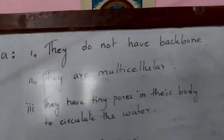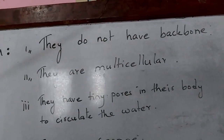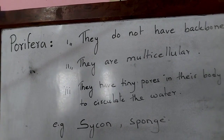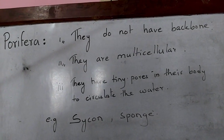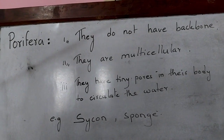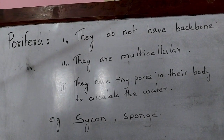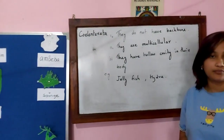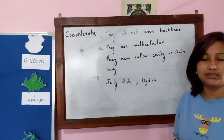To summarize Porifera: they do not have backbone, they are multicellular, and they have tiny pores in their body to circulate the water.